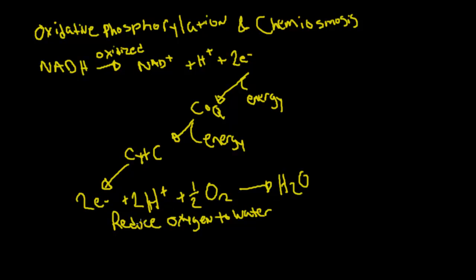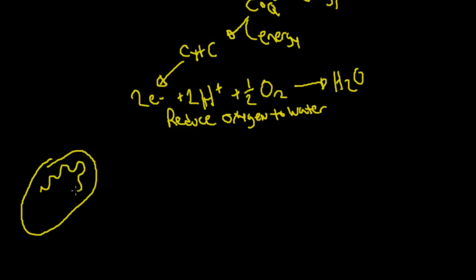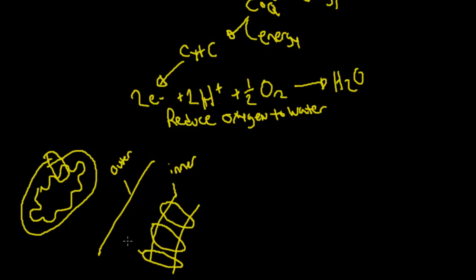We're going to use this energy to help transfer some hydrogen protons inside the mitochondria. Essentially I'm looking at this space: we have the outer membrane, we have the inner membrane space inside the mitochondria, and we're going to have these little protein complexes that use up that energy from the oxidation of NADH. So we end up with some hydrogen protons here, and that makes this space more acidic.